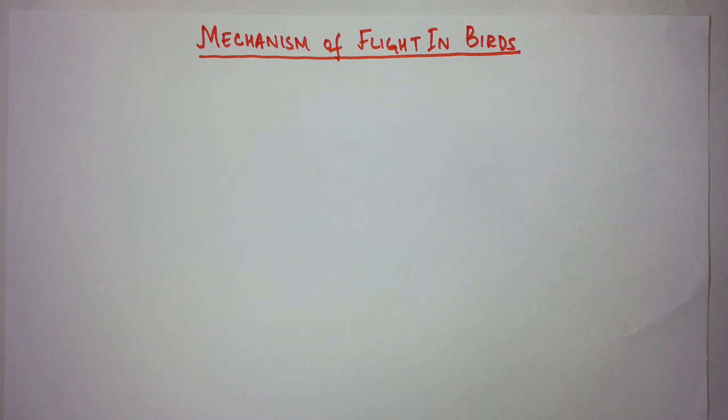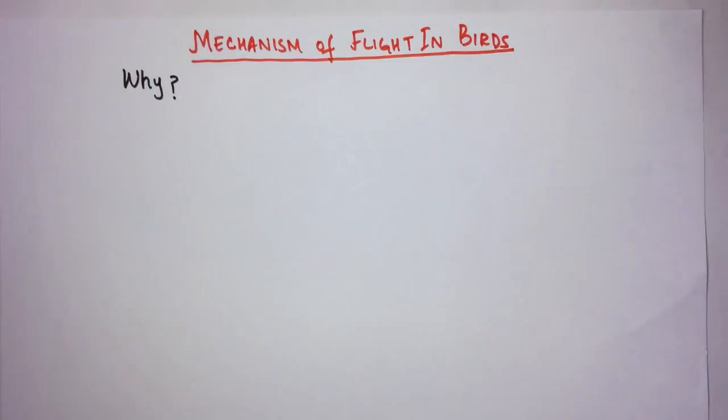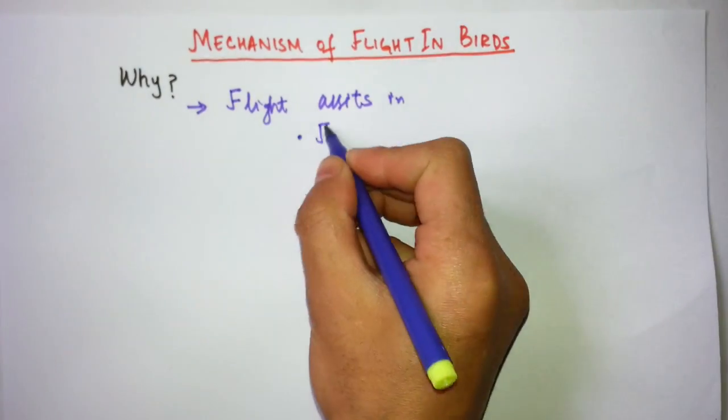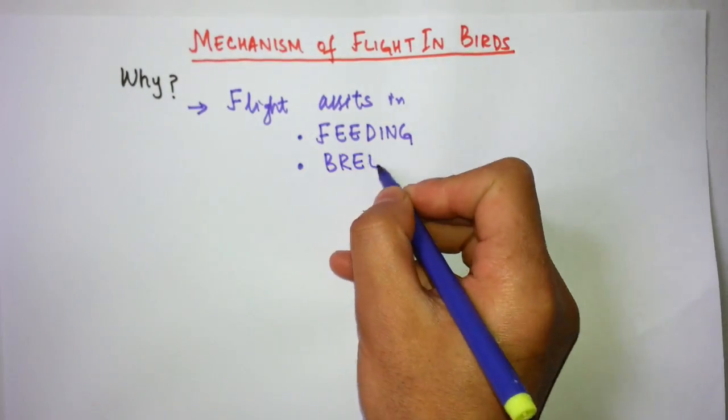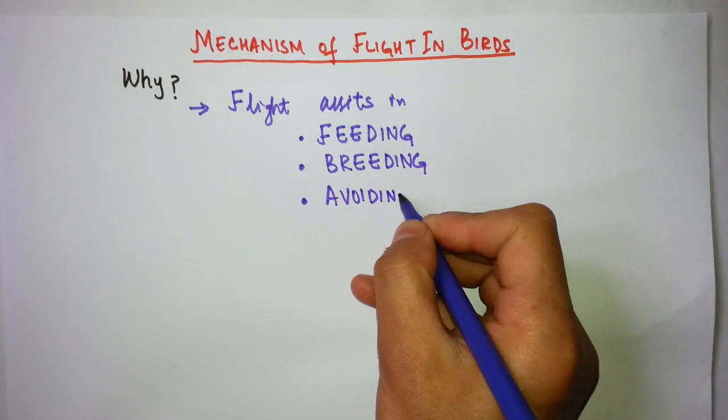Let's put the case of hummingbirds aside because they have a different mechanism for flight. We will discuss the physics behind the hummingbird's mechanism later on. Let's start with why birds fly. Birds fly due to four reasons: feeding, breeding, avoiding predators, and for migration purposes.